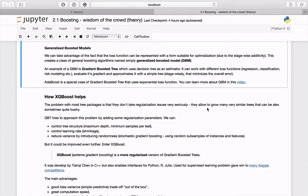Sometimes they allow to grow many very similar trees that can also be sometimes quite bushy. Although they try to approach this problem by adding some regularization parameters, for example we can control the tree structure, we can control learning rate, we can reduce variance by introducing some randomness.